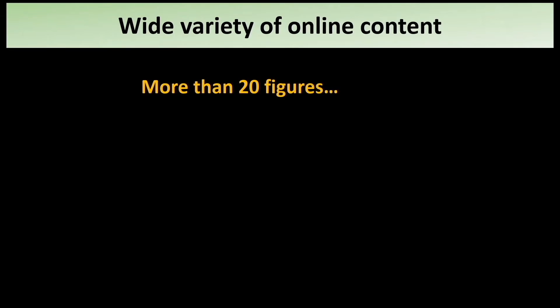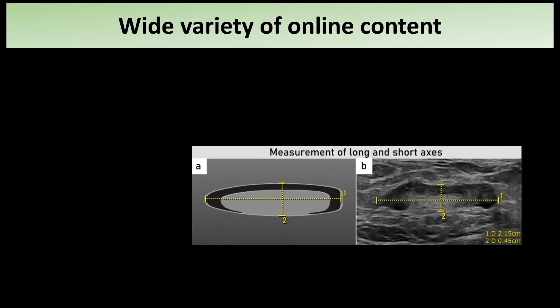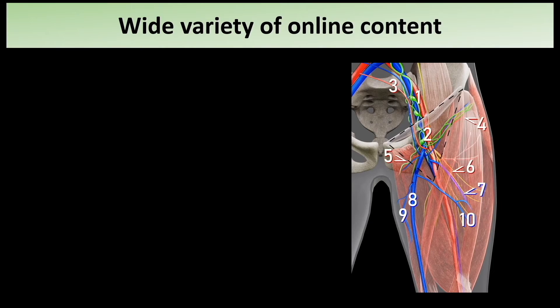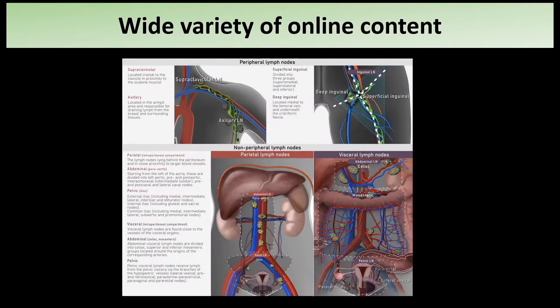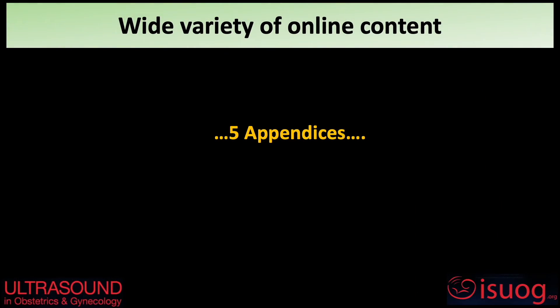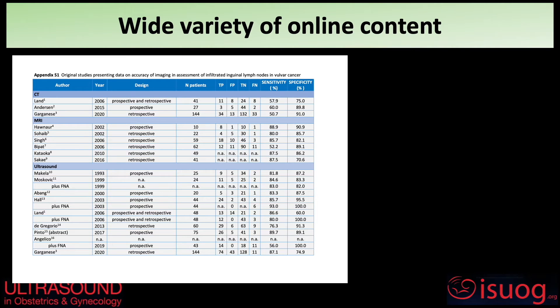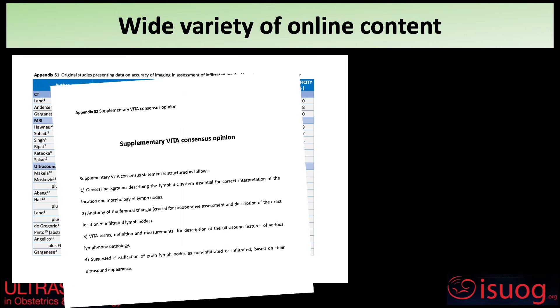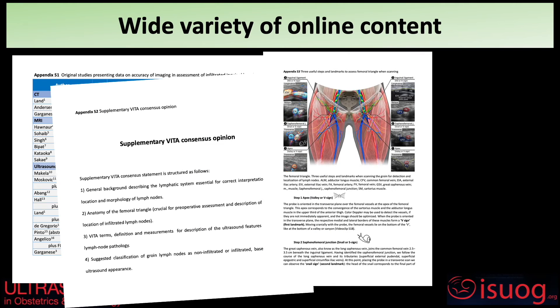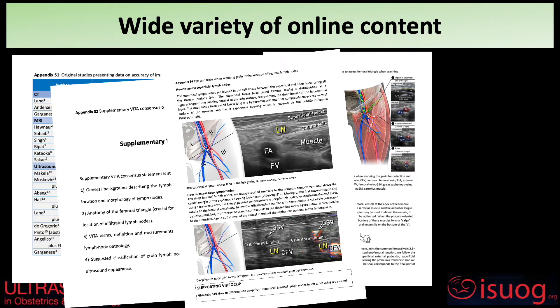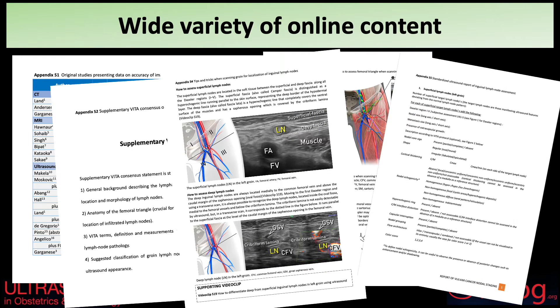Additional information is available online, including more than 20 figures of anatomy, terminology and measurements of lymph nodes. Five appendices cover many issues: from the examination of literature review, to suggesting tips and tricks to help the sonographer, from the description of the lymphatic system, to providing a standardized report of node assessment.